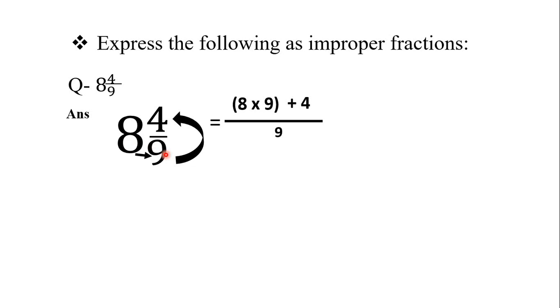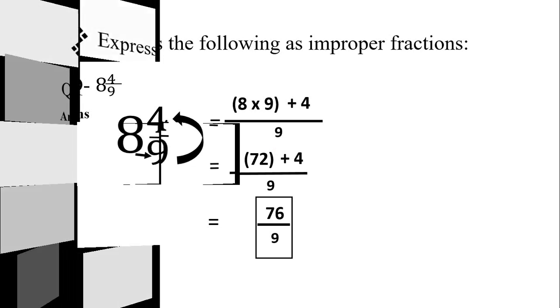Ab open fraction, last slide me bhi aapne yehi dekha ki maine denominator ko 3 ka 3 hi rakha tha. Kyunki denominators na hamare mixed numbers ke change hote hai, agar ham usse fraction me convert kare to. Aur nahi improper fractions ke mixed number me convert kare to. Denominator ka number change hote hai. It will be same. So now let's move on. 8 ko 9 se multiply karenge. Aur jo bhi answer ane wala hai, woh answer ko ham is 4, numerator wale 4 ko ham add karenge. Denominator is just for copying. 8, 9s are 72. Sabse pehle hamay bracket ko multiply kar lena hai. Then we are going to add 4. So 72 plus 4 will give you 76. And the denominator 9. This is our improper fraction. We'll move on to the next question.